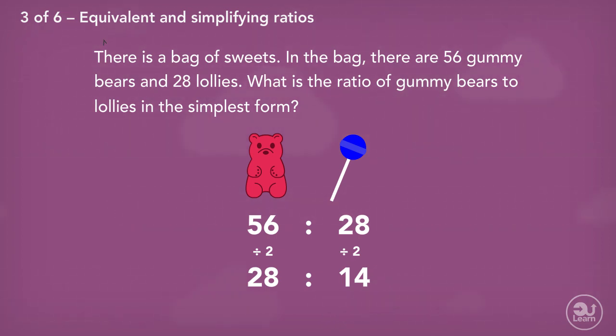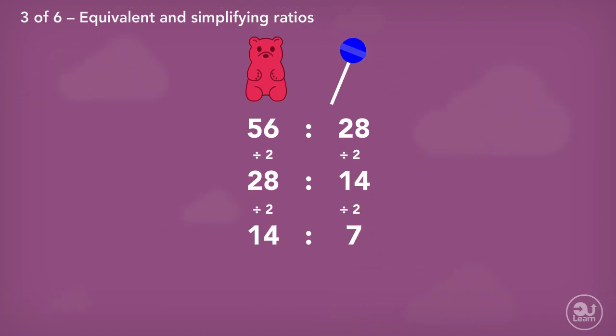We check again to see if we can find another factor. The values can be divided by two again to give us the new ratio of 14 to seven. Checking again, the values can be divided by seven to give us the ratio two to one.